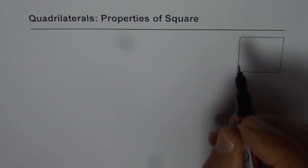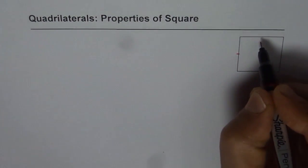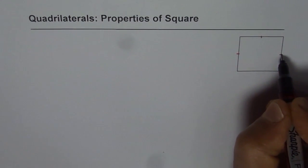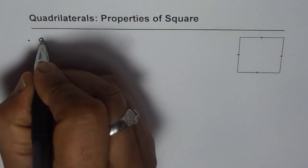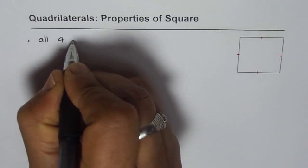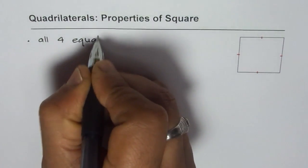The first one which you see that the four sides of a square are all equal. So it has four equal sides. We can write it down. A square has all four equal sides.